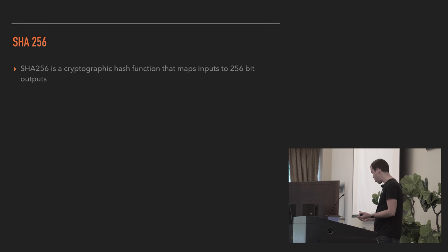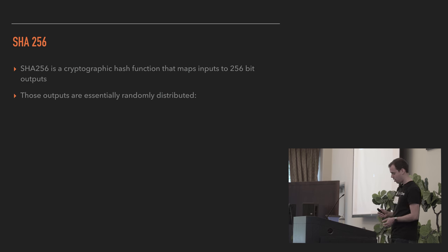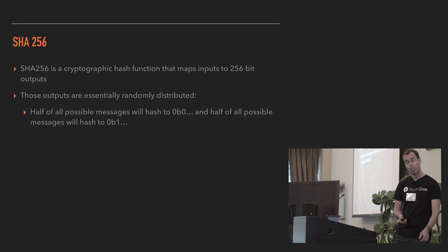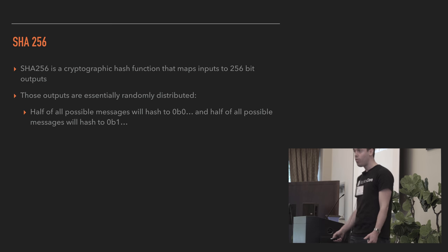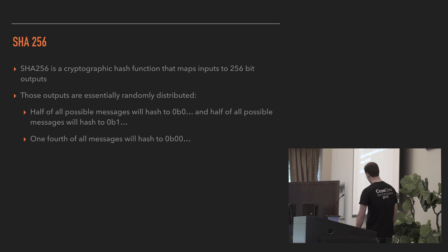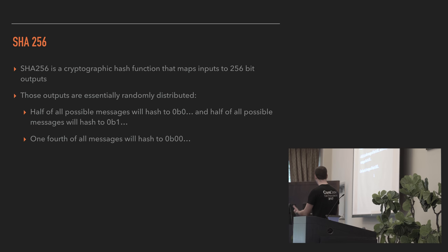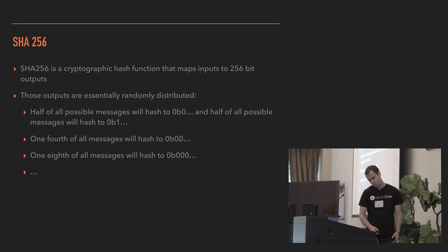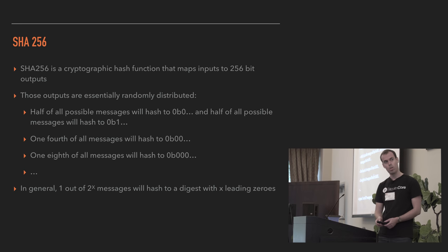SHA-256 is a cryptographic hash function — it's a variant of SHA-2 with an output of 256 bits. Those outputs are randomly distributed. There'll be 256 bits in the output, so half of all possible messages will have a digest with a leading zero. Half of the outputs start with a zero and half start with a one. One fourth of all messages start with two zeros, because each bit is independently random — the distribution is random even though it's deterministic. One eighth of all messages start with three zeros (that's 2^3). In general, one out of 2^x messages will hash to a digest with x leading zeros.